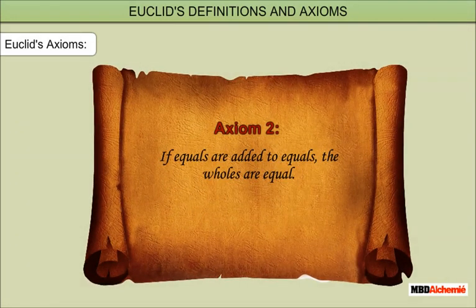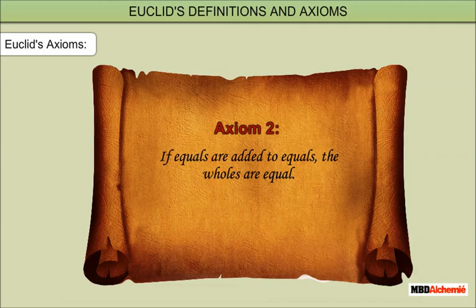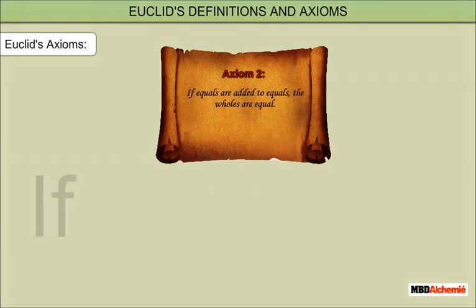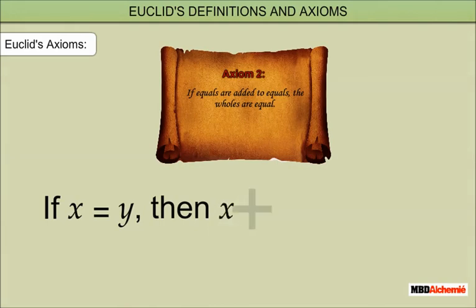Axiom 2: If equals are added to equals, the wholes are equal, that is, if x is equal to y, then x plus z is equal to y plus z.